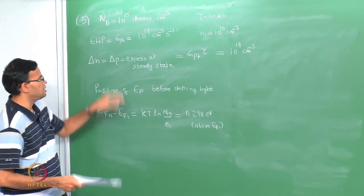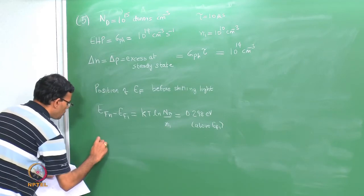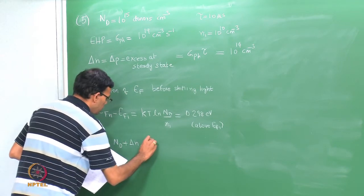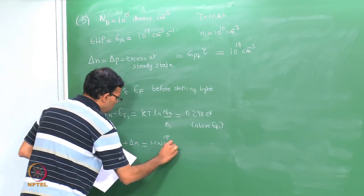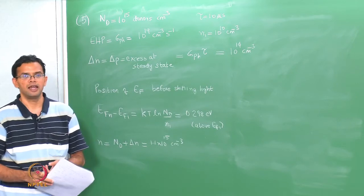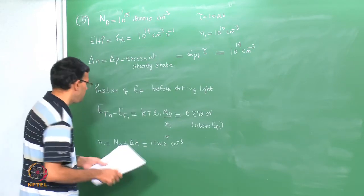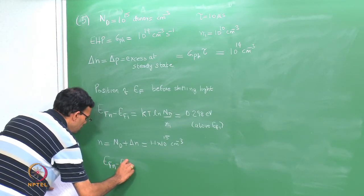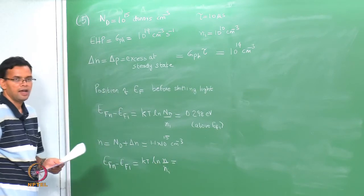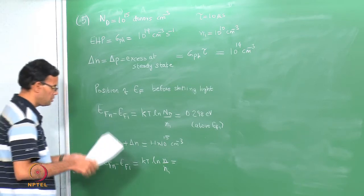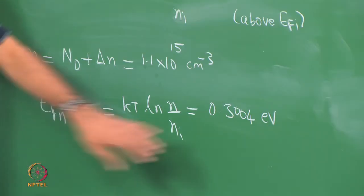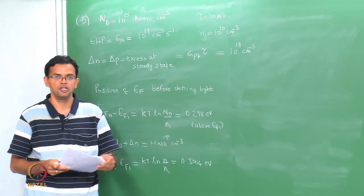When we shine light, the new electron concentration n = N_d + Δn = 1.1×10¹⁵ per cm³. This excess concentration causes a slight shift in the Fermi level — the quasi-Fermi level. The new E_Fn − E_Fi = kT·ln(N / N_i) where N = 1.1×10¹⁵, giving 0.3004 eV. The shift is very small because the increase is not that large, but there is still a small shift.